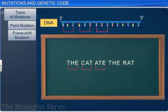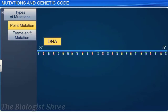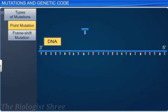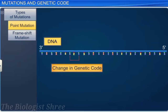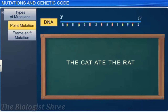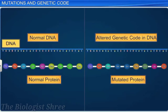In point mutation, only one base is substituted by another base, which results in a change in the genetic code. In our statement, if we replace C with B, the altered statement will read 'the bat ate the rat.' Such a change in the genetic code can lead to undesirable consequences.